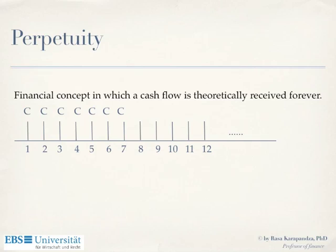Perpetuity is a financial concept that pays you a fixed amount of money in every period of time, starting one period from now and going forever. So if C is, say, one million dollars every year, then in one year you receive one million dollars, in two years one million dollars, in three years one million dollars, and forever every year one million dollars. What is the present value of such a financial concept?